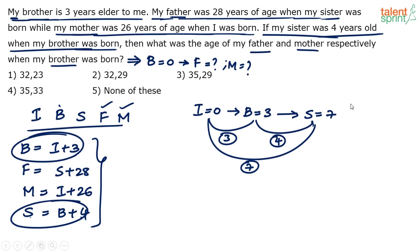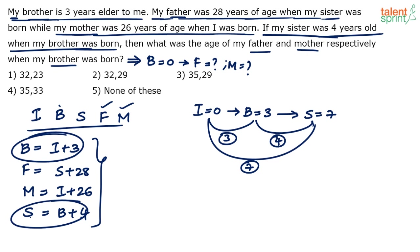Now look at the other equations. Father's age = sister's age + 28, which means when sister was born (s = 0), father was 28 years old. When sister was zero, what was brother's age? It would be minus 4 — which sounds illogical, but let's reverse the timeline.